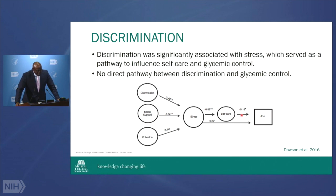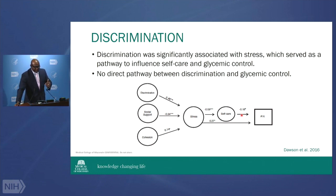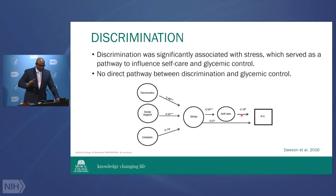Another mentee, Dr. Dawson, looked at discrimination. The question was: we know there's discrimination and it impacts you, but what is the mechanism? Using similar methodology, we hypothesized that discrimination would impact stress, and stress would impact self-care and glycemic control. That's what we found. But we also found that social support buffered that relationship — people with strong social support actually did better. Neighborhood cohesion also made a difference. Stress had two pathways: one through self-care and another directly on glycemic control. This raised questions about how discrimination leads to poor outcomes, and showed some of those pathways are actually studiable.